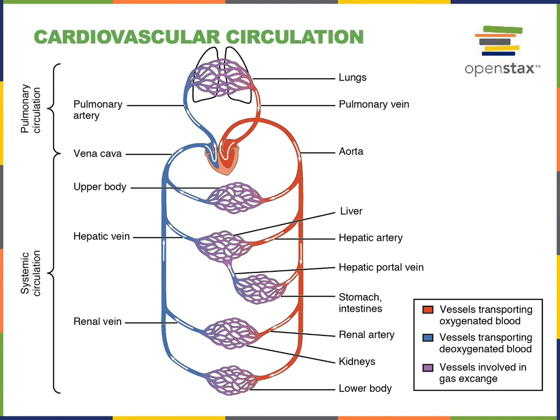Blood flows out of the heart into arteries. The largest arteries, known as elastic arteries, are able to stretch out in order to receive the increased volume of blood as blood is pumped out of the ventricles into the arteries. The aorta is the major elastic artery that receives oxygen-rich blood at high pressure from the left ventricle, and then blood flows out of the aorta into smaller branches that distribute blood to different regions of the body.